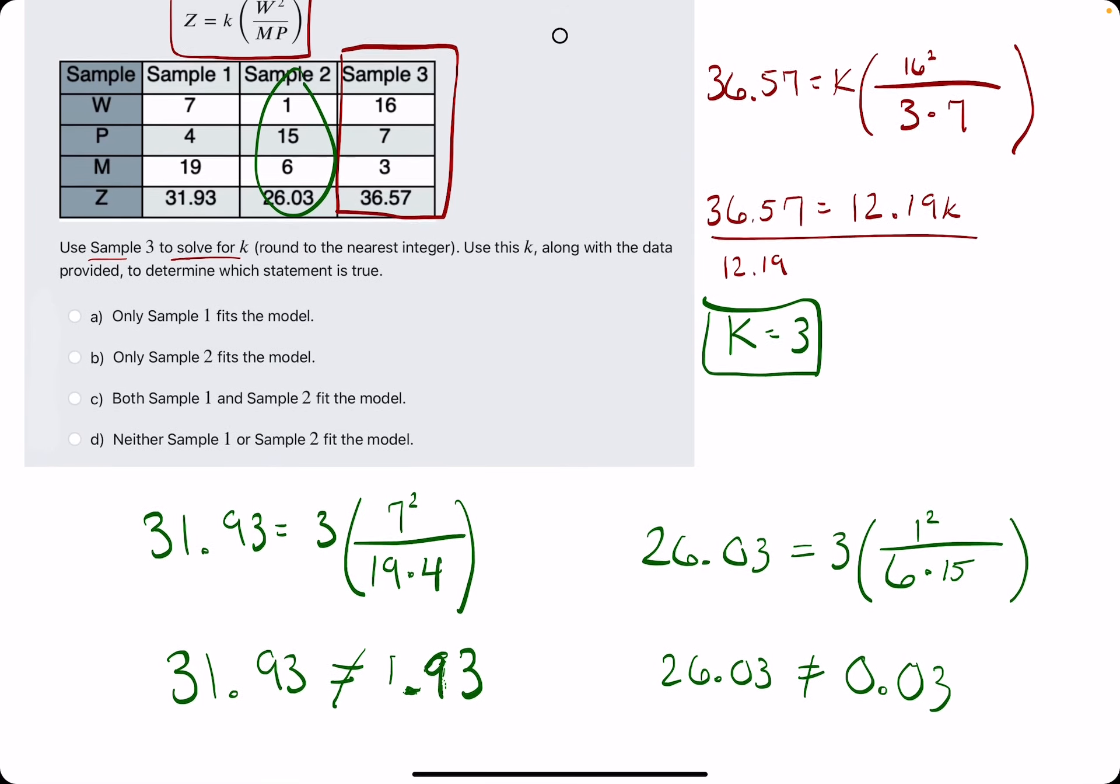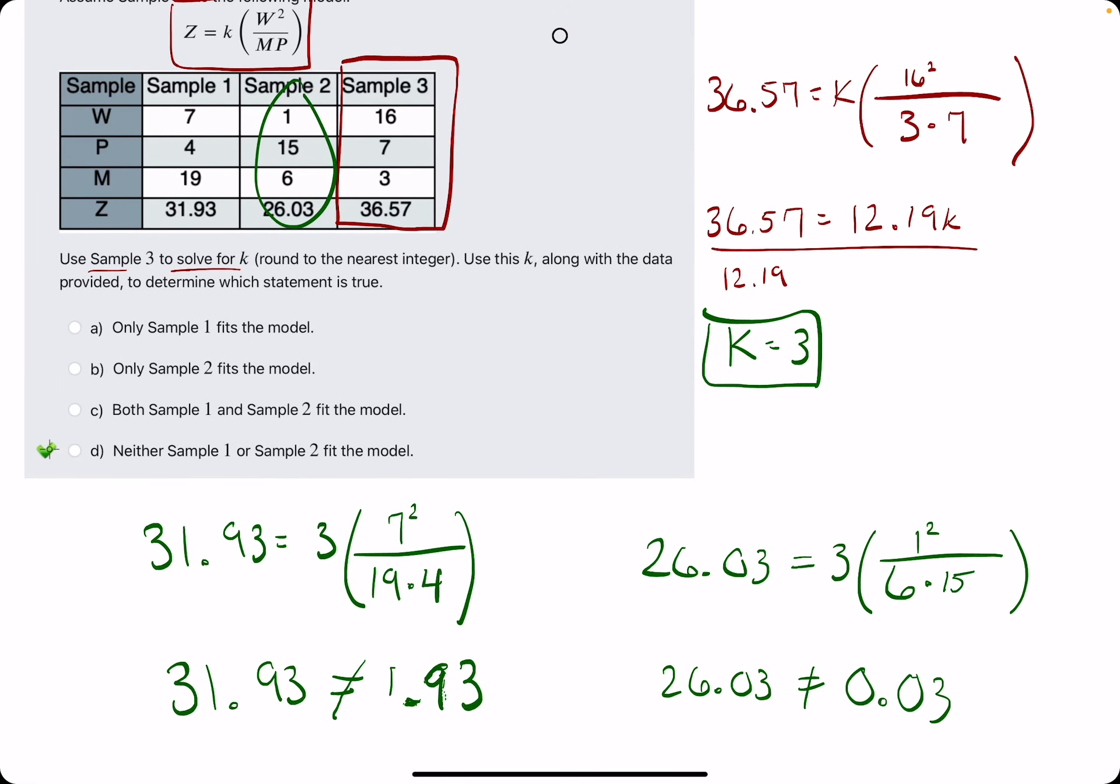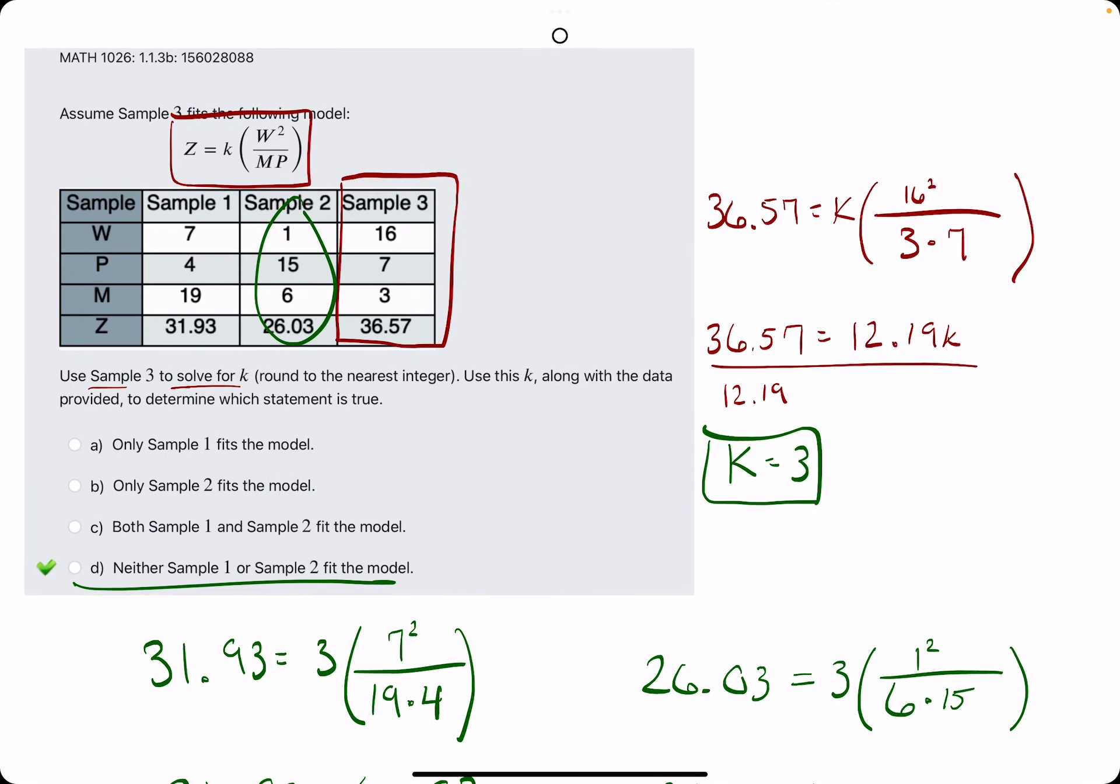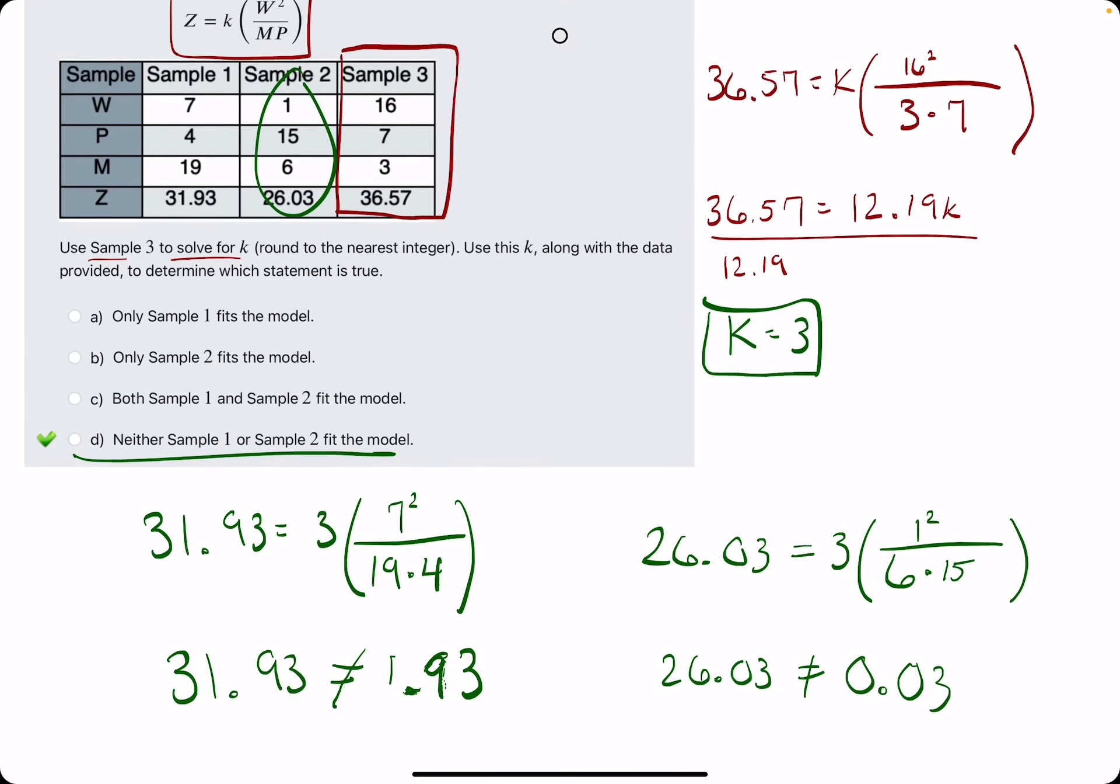So it looks like neither Sample 1 nor Sample 2 fit the model. And that's pretty much it. If you have any questions, let me know. If you'd like to see another example worked out, feel free to check out the second example.